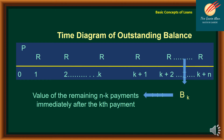The outstanding balance of a loan is the amount of the loan at a given time. One method to compute the outstanding balance is to get the present value of all remaining payments — this is called the prospective method. We use the symbol B_k to denote the outstanding balance after k payments.